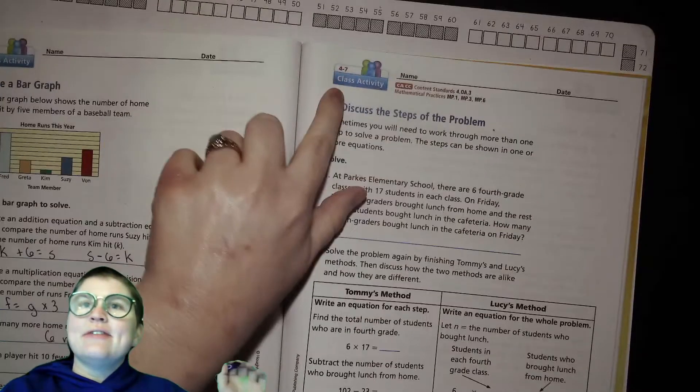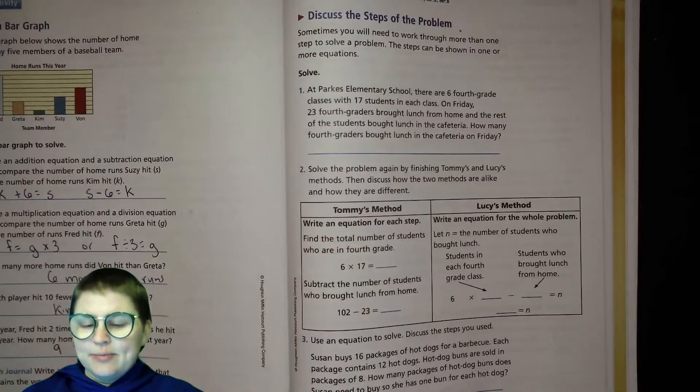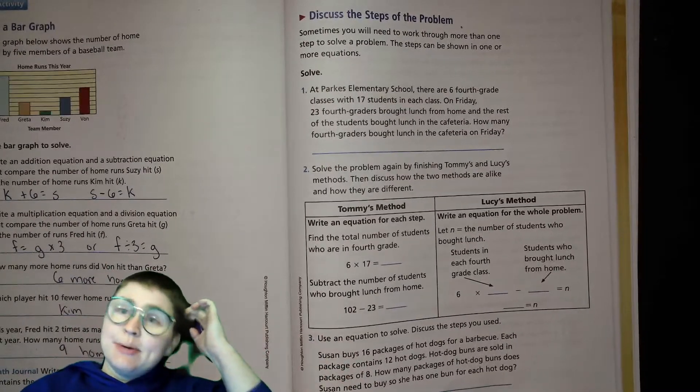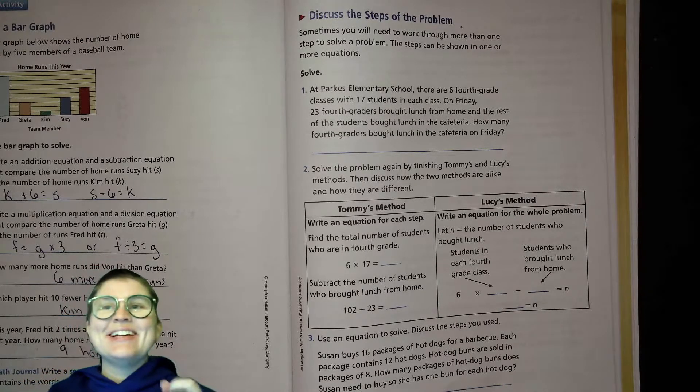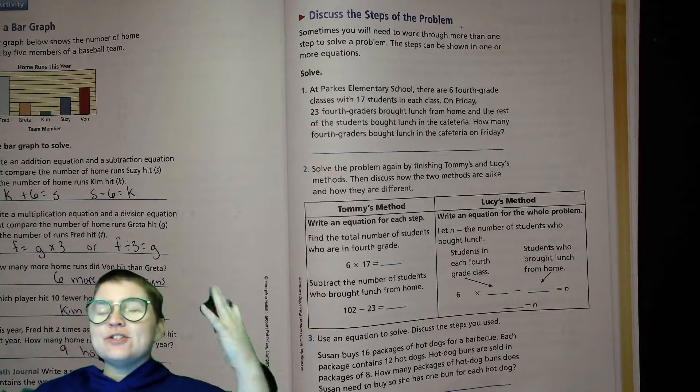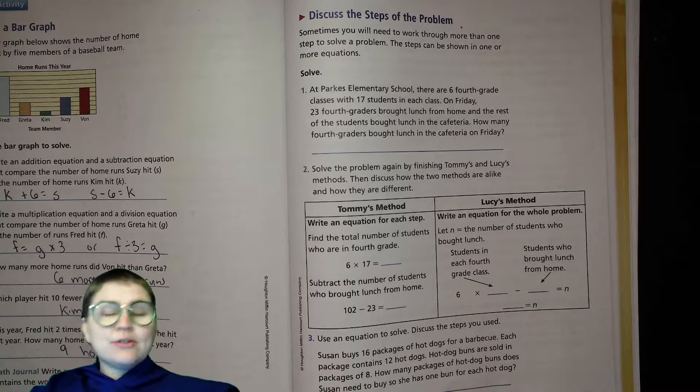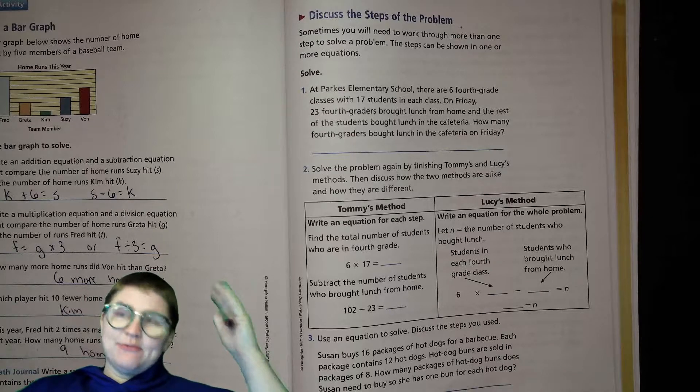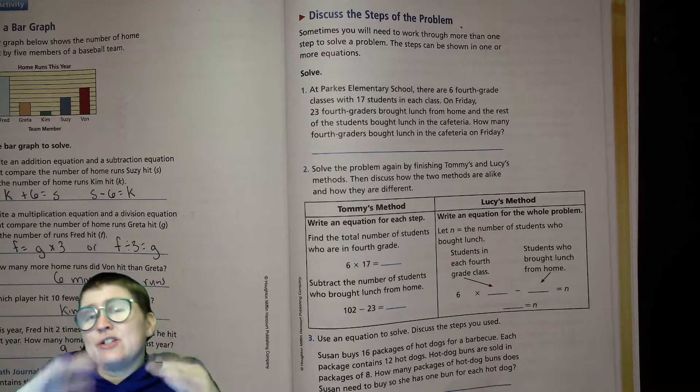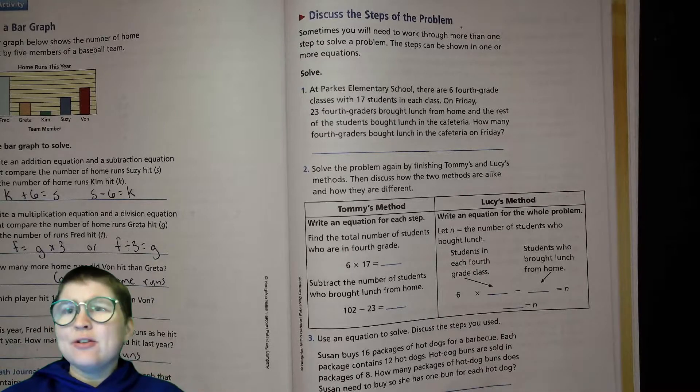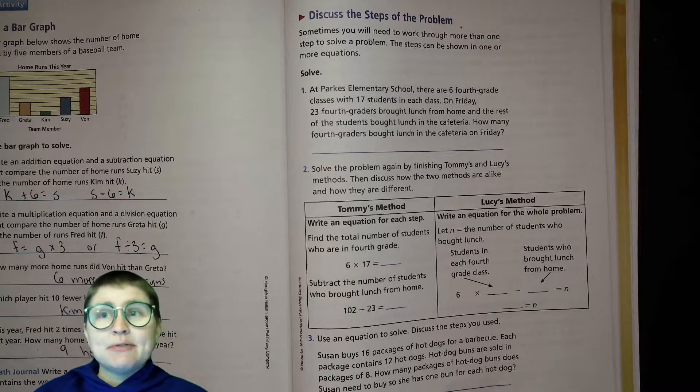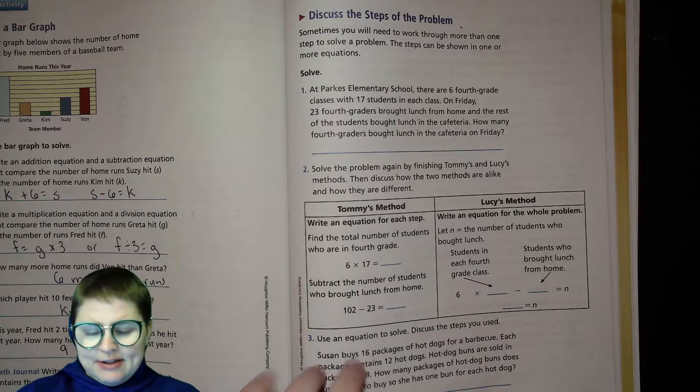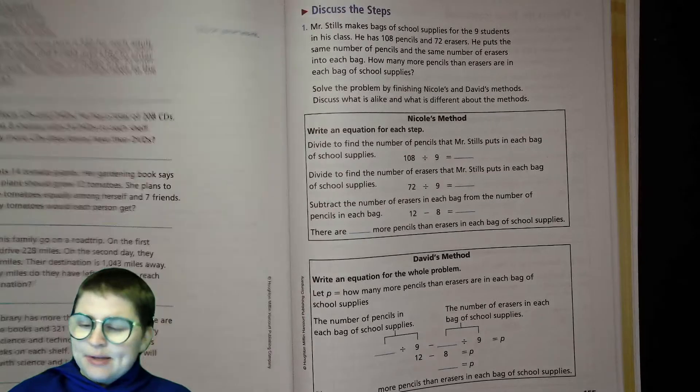We're doing Unit 4 Lesson 7, which is on page 153 of our books. And what we're focusing on today is when we read a word problem, before we start just slapping some numbers together to see what comes out, we need to visualize the problem in the world so that we can figure out how to write it down as equations or expressions. And there's more than one way to do that when there's multiple steps involved. So we're going to talk about two different ways to do that right now and then have some practice time. So let's jump into it.